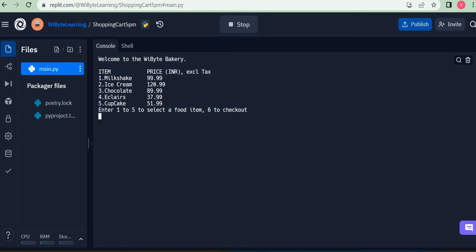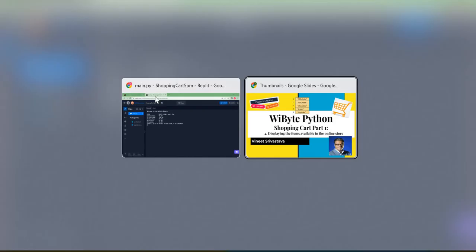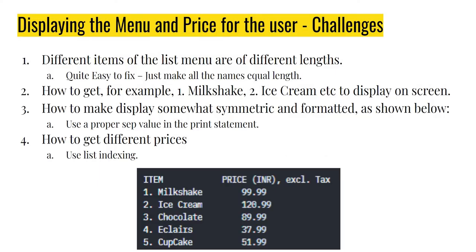Before we start coding, let's understand the challenges we have to deal with. Number one: we have the list menu with items like milkshake, ice cream, chocolate, eclairs, and cupcake. Unfortunately these items are of different lengths — the number of characters. For example, milkshake has nine characters but cupcake has only seven. We need to fix this because we want to nicely format these prints.